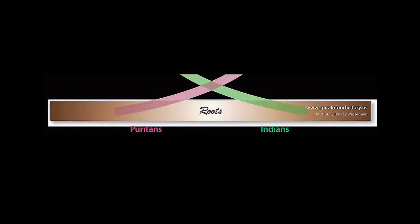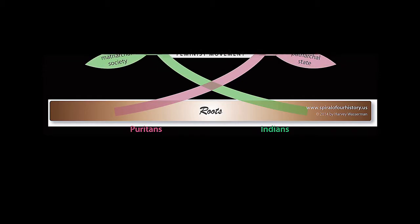Like all living things, the United States of America has a genetic code, a cycle of life, and a unique destiny. The United States as we know it is actually the product of a conception at birth between the Puritans who came here in 1630 and the Native Americans who have been here essentially forever.